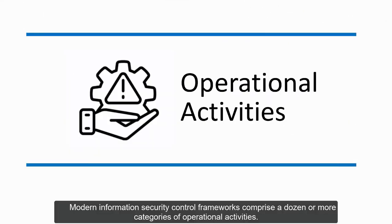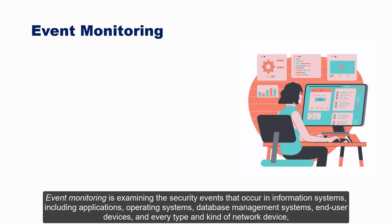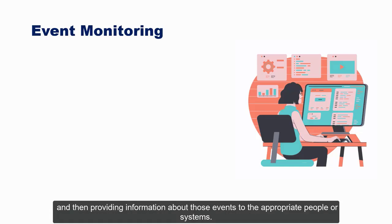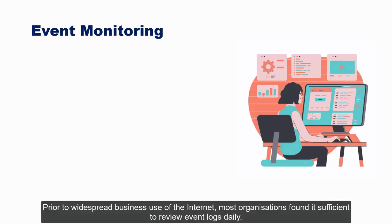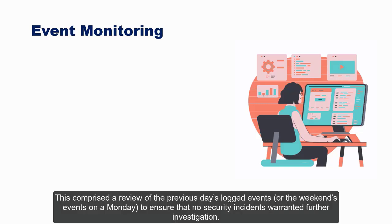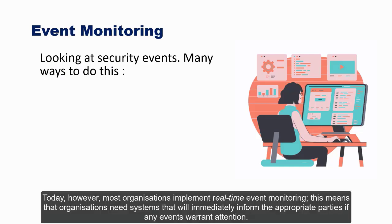Modern information security control frameworks comprise a dozen or more categories of operational activities. Event monitoring is examining the security events that occur in information systems — including applications, operating systems, database management systems, user devices, and every type of network device — and then providing information about those events to the appropriate people or systems. Prior to widespread business use of the internet, most organizations found it sufficient to review event logs daily. Today, however, most organizations implement real-time event monitoring, needing systems that will immediately inform the appropriate parties if any events warrant attention.